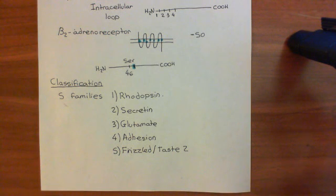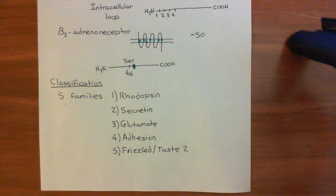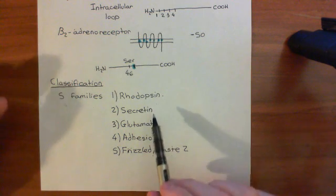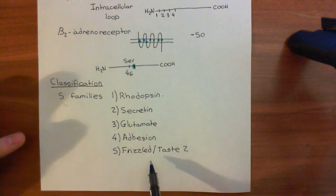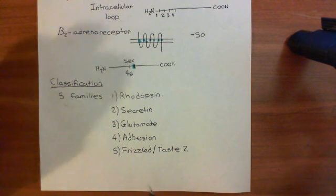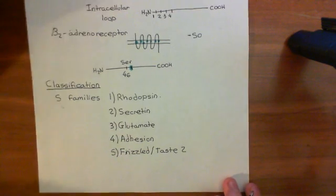Welcome to this next video in which we are discussing the G-protein-coupled receptors. At the moment we're in the process of introducing basic concepts associated with GPCRs, and now what we're talking about is the classification of the G-protein-coupled receptors into the five families: the rhodopsin family, the secretin family, the glutamate family, the adhesion family, and the frizzled-taste-2 family. We're going to work through these families one by one, starting with the rhodopsin family.